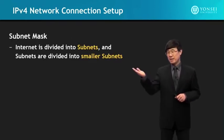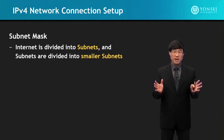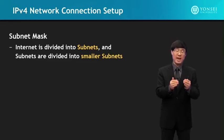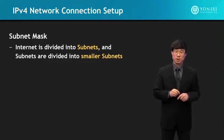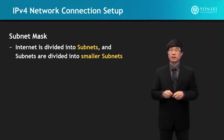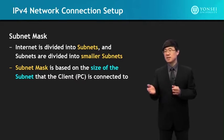Now, subnet mask. The Internet is divided into subnets — these are subdivisions of the overall Internet. Networks are grouped together to be managed together, which helps routing to be much more efficient and scalable. The Internet is divided into subnets, and subnets are divided into smaller subnets within. A subnet mask is based on the size of the subnet that the client PC is connected to.